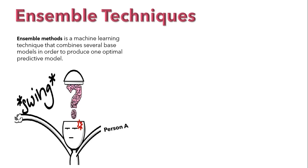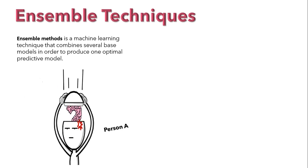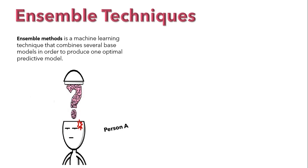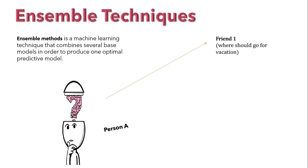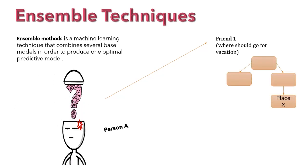Let's say person A wants to go out for a vacation but he is not sure where should he go. So what he will do is he will go to his friend and ask where should he go for vacation by considering his past tours. So his friend will suggest him some of the places based on his past tours.